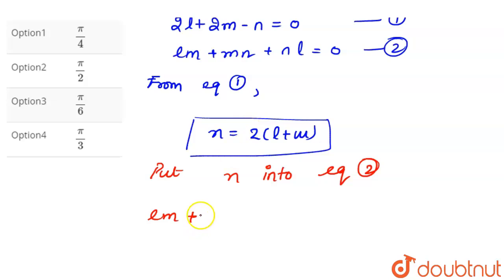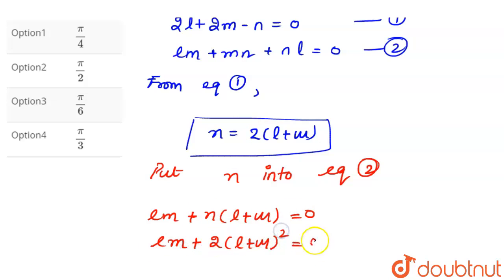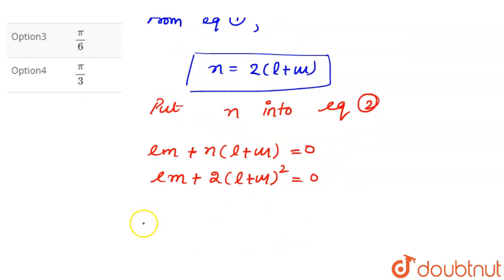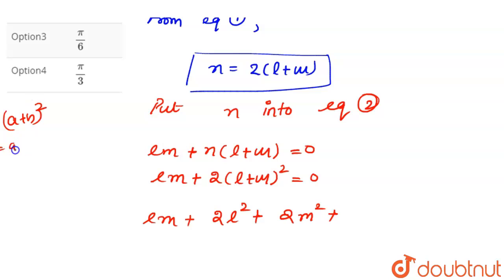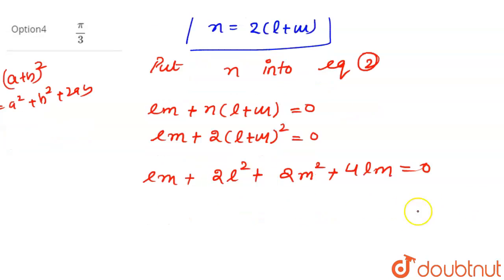Here n is common, so we have lm + n(l + m) = 0. The value of n is 2(l + m), so it becomes lm + 2(l + m)² = 0. Opening the bracket using (a+b)² = a² + b² + 2ab gives us lm + 2l² + 2m² + 4lm = 0.